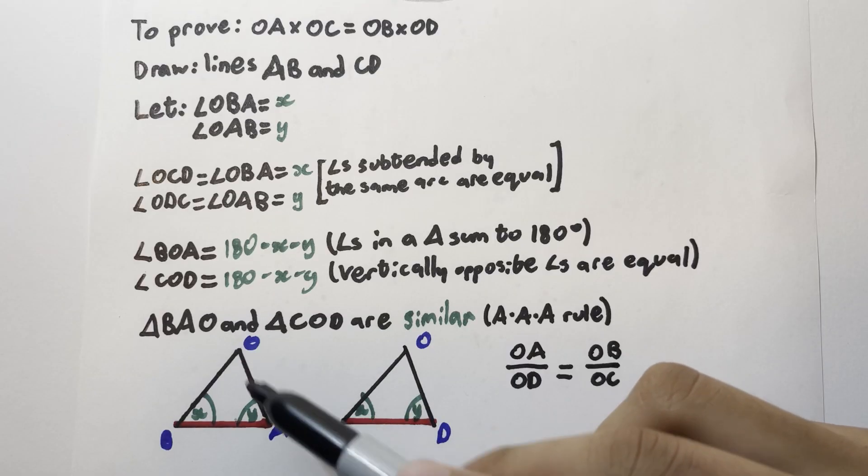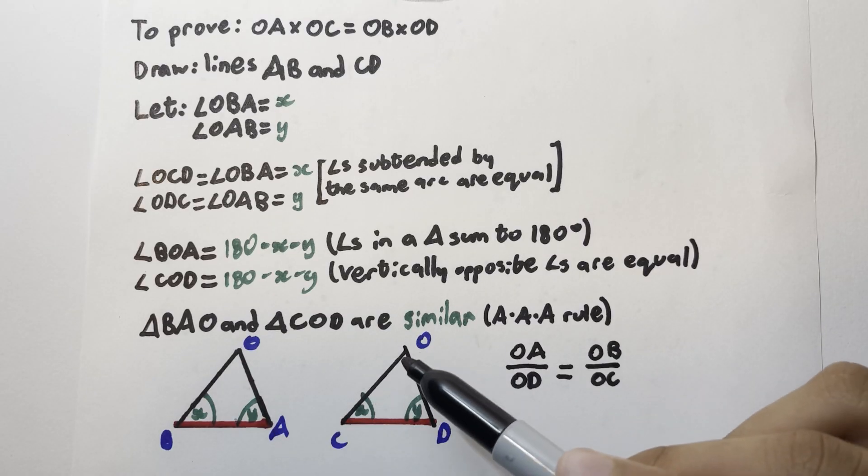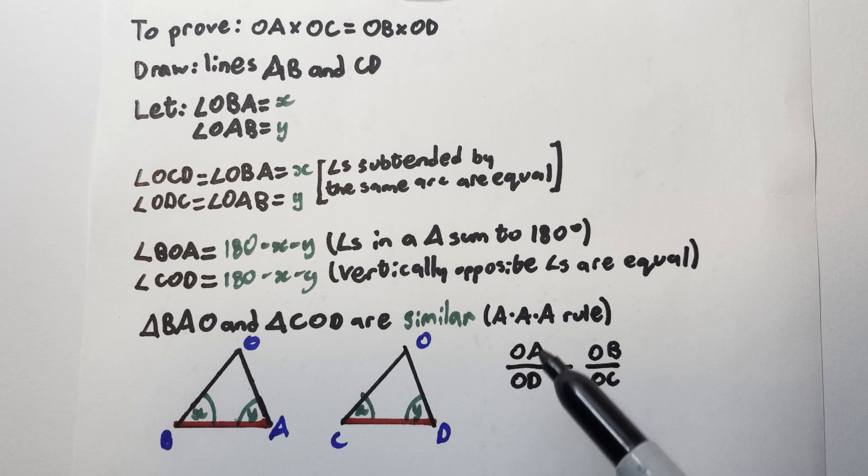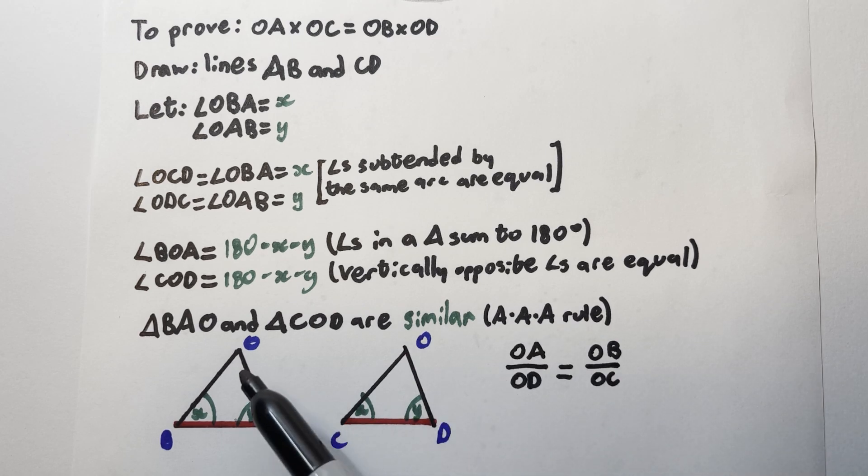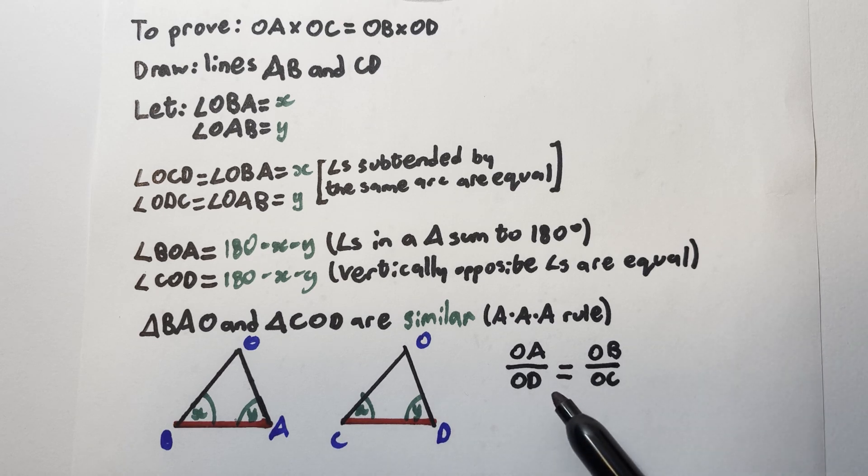The ratio between OA on the first triangle and OD on the second triangle, also written as OA divided by OD, is the same as the ratio between OB and OC. Now we can multiply both sides of this equation by OD and by OC to remove the denominators.